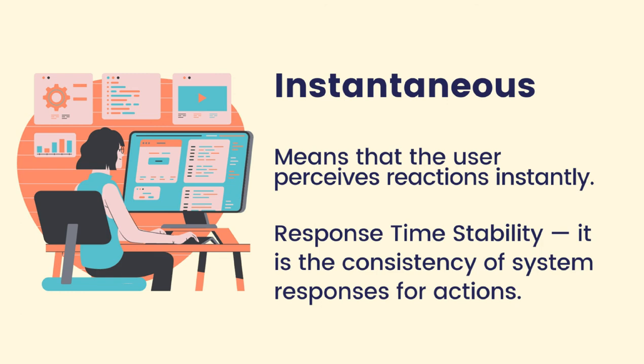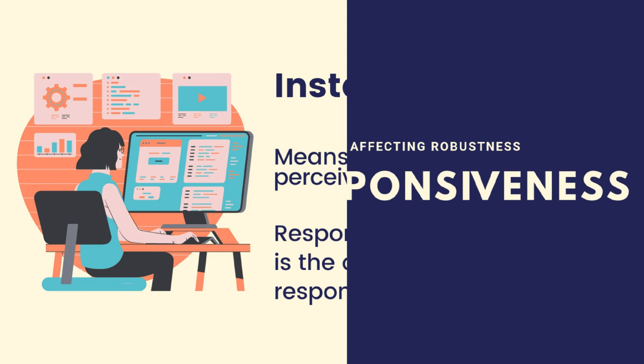From the word itself, stability — meaning hindi nagbabago, consistent yung system mo kahit na inulit mo ulit yung action na ginawa mo. Yun nga, sa pulldown menu, kinlik ko ulit sya later on, the next day, at sa mga susunod na araw — gano'n pa rin yung response sa akin ng system. Yun yung stability — response time stability, consistent sya, hindi nagbago. So overall, responsiveness is how the system immediately responds to the user's goal and how essential it is to keep the interaction between the human and system dynamic.